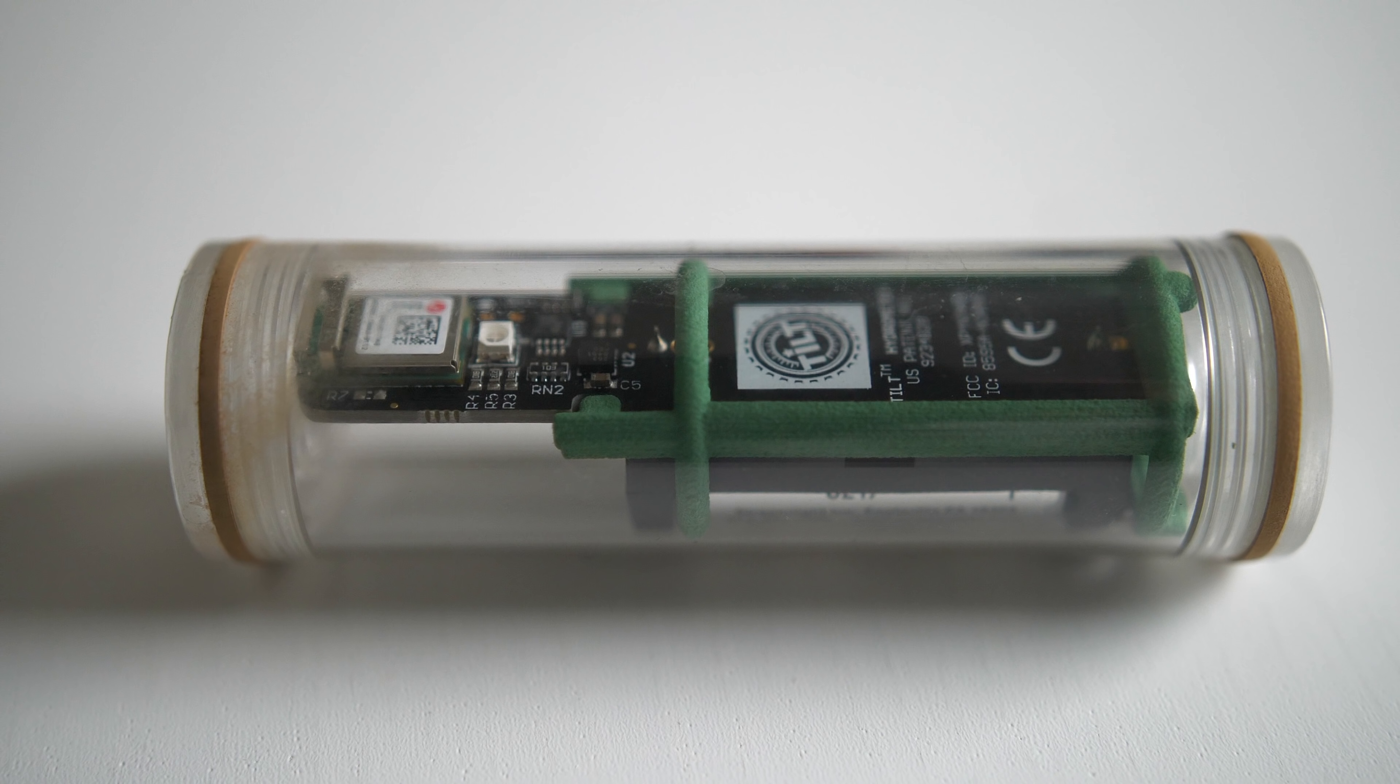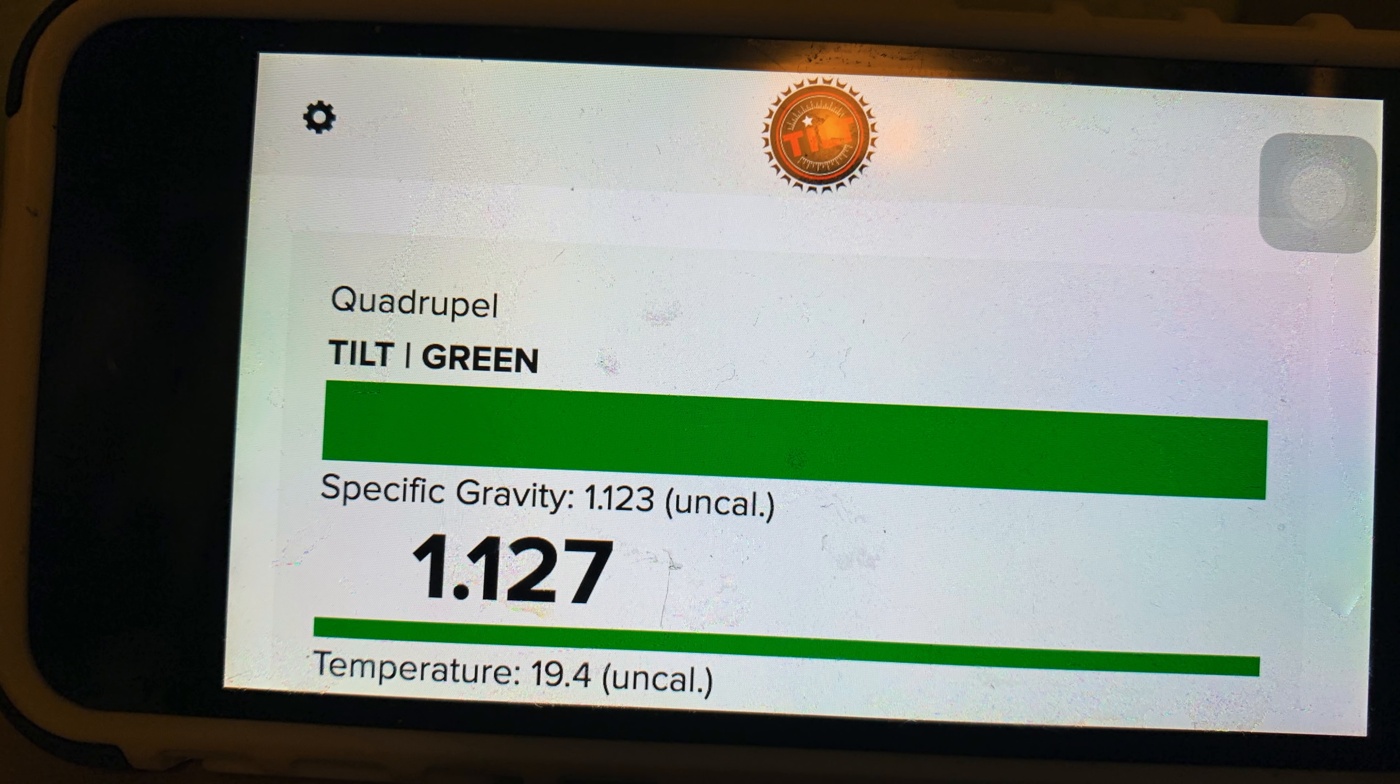The tilt measures temperature and specific gravity, and beams this information via Bluetooth to the smart app.